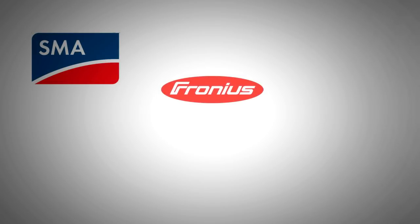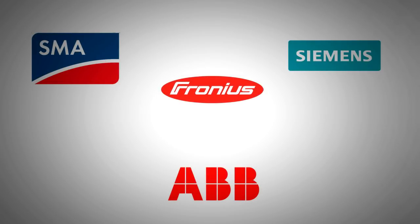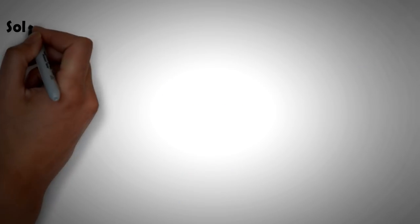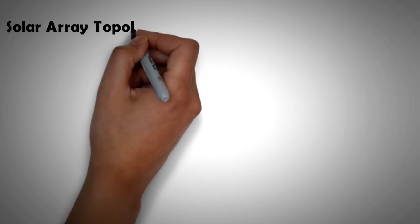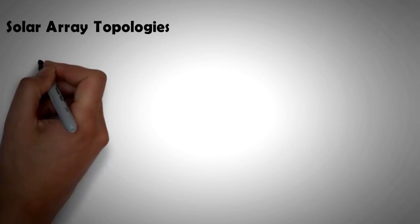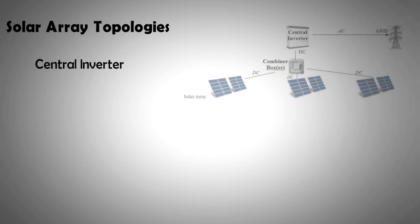These included SMA, Fronius, Siemens, and ABB. There were two different topologies for electrical systems that large-scale solar installations could use. One was the centralized electrical system which used a single inverter for the whole setup. This was called the central inverter topology.